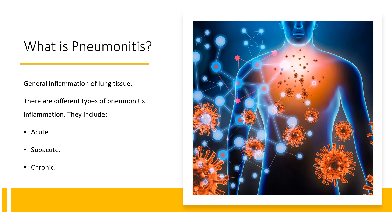There are different types of pneumonitis inflammation. They include: Acute — inflammation develops suddenly and only lasts a little while. Subacute — inflammation progresses gradually and steadily. Chronic — inflammation unfolds over a long period and becomes ongoing.